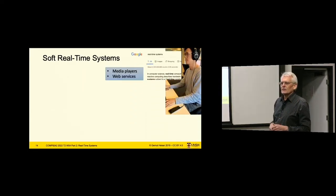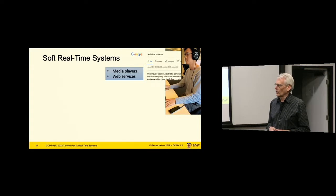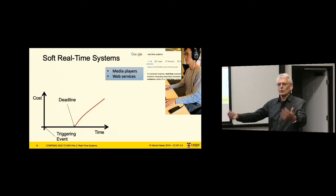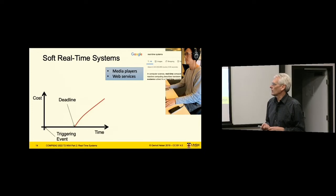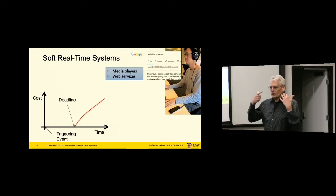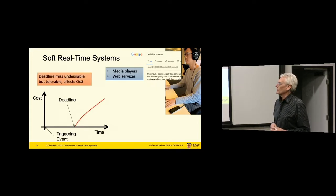Soft real-time systems — you use them all the time when you listen to audio or video on your phone. Multimedia systems are typically cases of soft real-time systems. They may or may not have actual deadlines; in practice they do because audio and video processing are periodic processes — you get your screen refresh, etc. If you miss the deadline for video, a single miss you won't notice. For audio we tend to be much more sensitive — people get upset when their audio is distorted, which is what happens when deadlines are missed. So there's a stronger sense of quality of service loss.